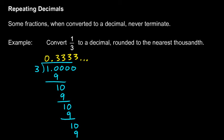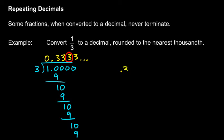We're told to round this to the nearest thousandth, so we don't need to keep going. The thousandth place is right here. We look one digit beyond that, and that digit is less than 5, so we don't round up. Our answer rounded to the nearest thousandth is .333.